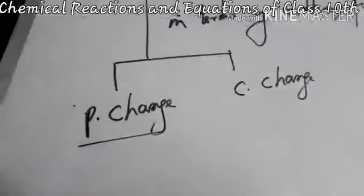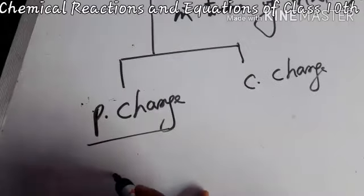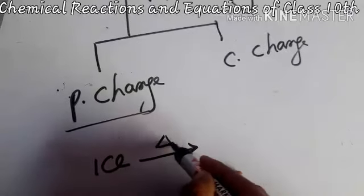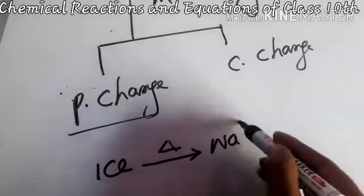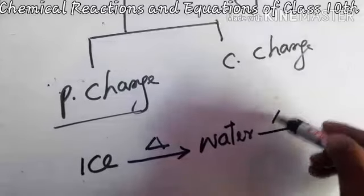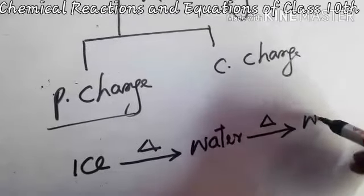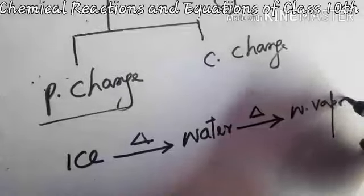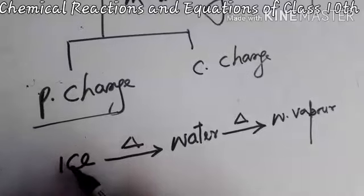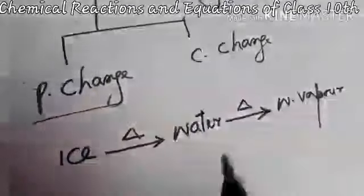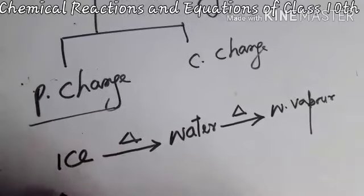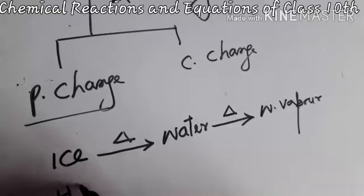For example, if we take ice and apply heat, it will form water. When we continue to apply heat, it will become water vapor. Ice, water, and water vapor - all three have the same chemical composition which can be represented by writing H2O.